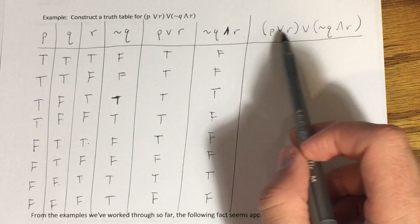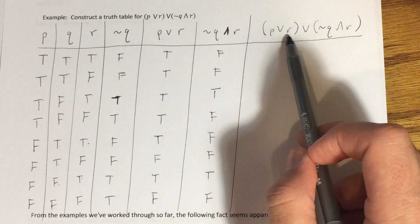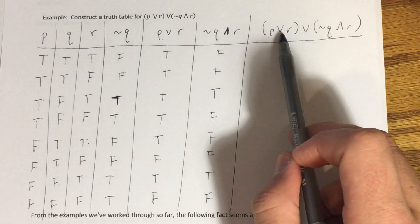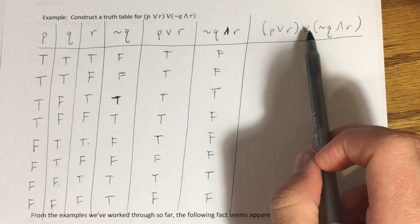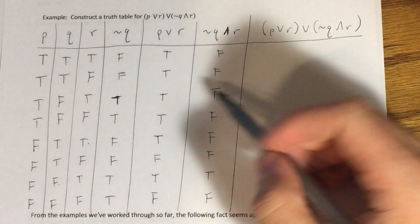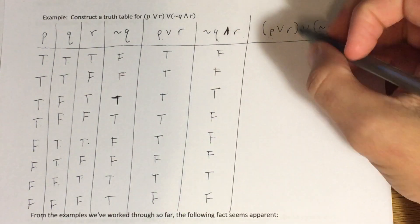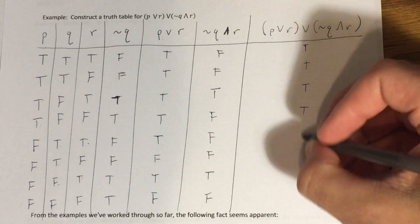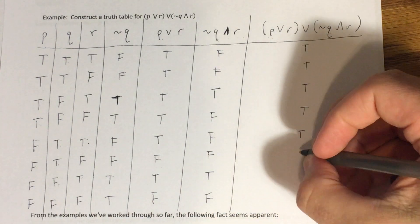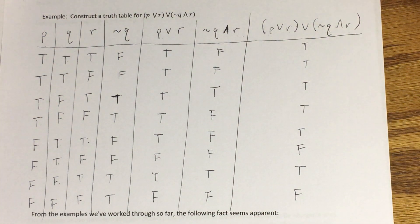For the final compound statement, we're taking the two parenthesized results and joining them with a disjunction. The previous two columns correspond to 'p or r' and 'not q and r.' For disjunctions, at least one statement needs to be true. In the first five rows, 'p or r' is true, so those are all true. Then we have false-false — false; true — true; false-false — false. This statement turns out to be true most of the time.